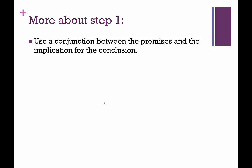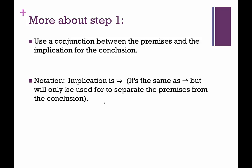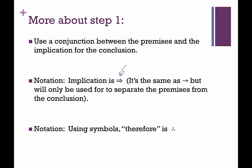Let's talk more about step one. We use a conjunction between the premises and the implication for the conclusion. The notation for implication is like a conditional but with two lines instead of one. One other thing we'll see is the triple-dot symbol — we read that as 'therefore.' That always comes before the conclusion, so you'll always be able to identify the conclusion because it has 'therefore' right in front of it.